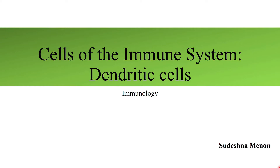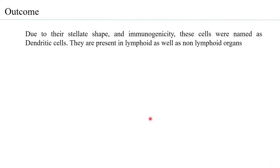Cells of the immune system — dendritic cells — are named so because the cell has many extensions that look like the dendrites of neurons, and that is how the name dendritic cells came up. This session will give you an overview of dendritic cells, which is slowly becoming a central point between innate immunity and adaptive immunity.